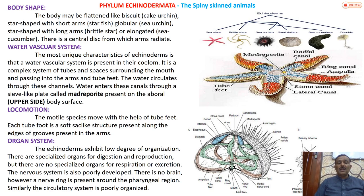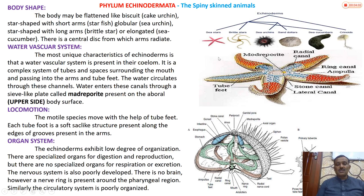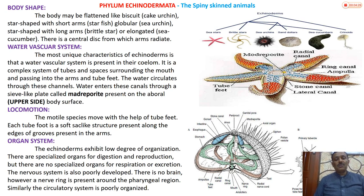In Phylum Echinodermata, sea urchins - also called cake urchins - can be globular in shape with short arms. Starfish are star-shaped with long arms. Sea cucumbers are elongated, pipe-like. There is a central disc from which arms radiate in the star-shaped forms.